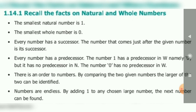Every number has successor. What do you mean by successor? Immediately next number. So, every number has successor. Every number has predecessor. What do you mean by predecessor? Before number. The number 1 has predecessor in W, namely 0. In whole number, 1 has a predecessor. That is before number 0. But in natural number, 1 has no predecessor, because natural number starts from 1, 2, 3, etc.